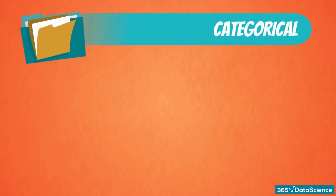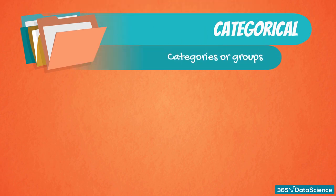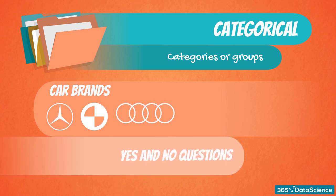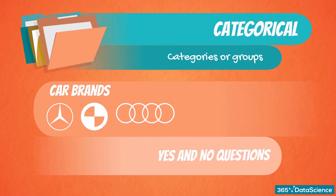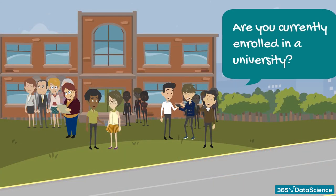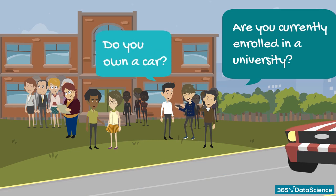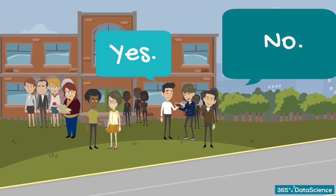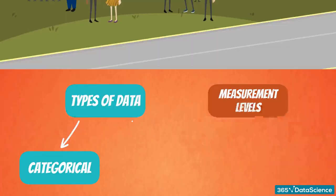Categorical data describes categories or groups. One example is car brands like Mercedes, BMW, and Audi — they show different categories. Another instance is answers to yes and no questions. If I ask questions like, 'Are you currently enrolled in a university?' or 'Do you own a car?' — yes and no would be the two groups of answers that can be obtained. This is categorical data.